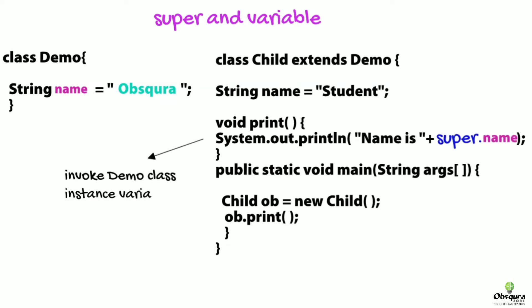When the local variable and instance variable are the same, hence JVM cannot assign the value. Refer to our previous video to understand local and instance variables.